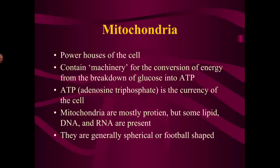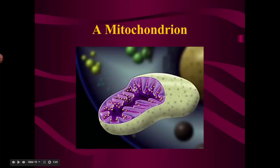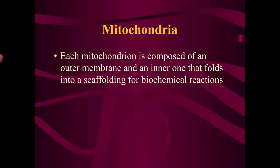Mitochondria are generally either spherical or football-shaped. This is a drawing — not a photograph — with a cutaway showing what a mitochondria might look like. You'll see this folded membrane on the inside with little round dots, which are enzymes involved in the production of ATP. That membrane is folded over and over again inside — the inner membrane is where all the biochemical reactions occur — and it's folded many times so you get a tremendously large surface area in a very small space. Those folds are called cristae.